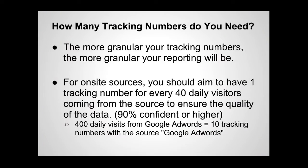We often get the question: how many tracking numbers do I need? In general, you want to be as granular as you want your reporting to be. If you have one tracking number for all of your TV ads, you're not going to necessarily be able to tell which TV ad is performing the best. For on-site or online sources like Google AdWords and Google Organic, you should use the rule of thumb of having one tracking number for every 40 daily visitors from that channel or source. So for example, if you get 400 daily clicks from Google AdWords, you should have 10 tracking numbers associated with the source of Google AdWords.